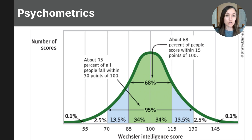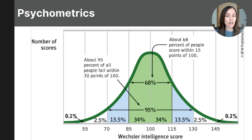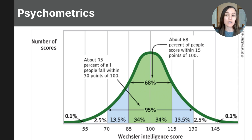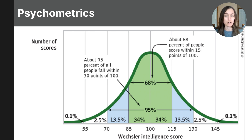The average IQ score is 100 and the standard deviation is 15 points, meaning most scores fall within 15 points above or below 100. AP Psychology students do not need to calculate standard deviation, but rather explain what it means. About 68% of scores fall within one standard deviation of the mean, ranging from 85 to 115. 95% fall within two standard deviations, between 70 and 130. And 99.7% fall within three standard deviations of the mean, which for IQ is a score of 55 to 145.